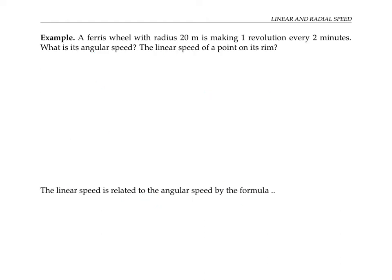Suppose we have a Ferris wheel with radius 20 meters that's making one revolution every two minutes. We want to find its angular speed and the linear speed of a point on its rim.